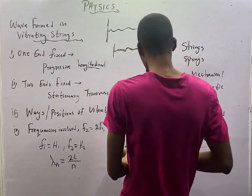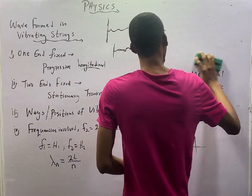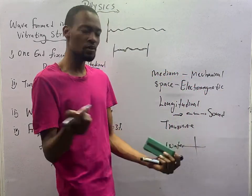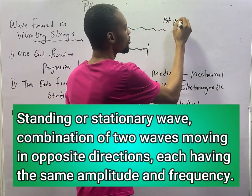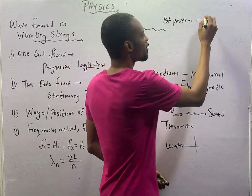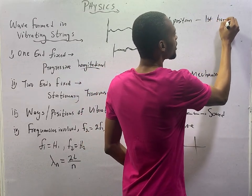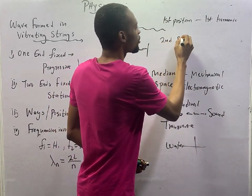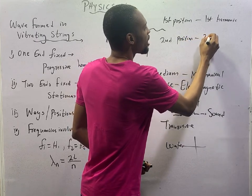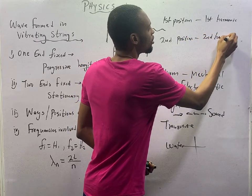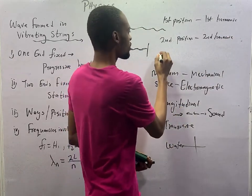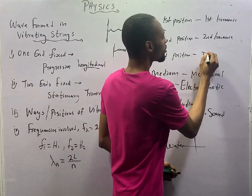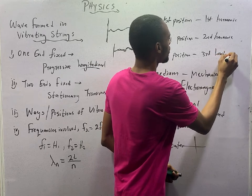Now, there are positions which this vibration can be done. In various positions, if you vibrate the first position or in first position, you get the first harmonic. If you vibrate in the second position, that is the second harmonic. If you vibrate in the third position, you get the third harmonic.